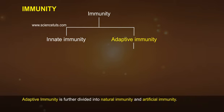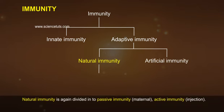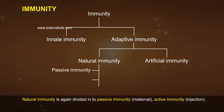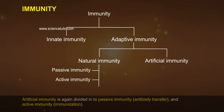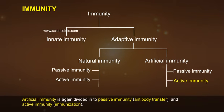Adaptive immunity is further divided into natural immunity and artificial immunity. Natural immunity is again divided into passive immunity (maternal) and active immunity (injection). Artificial immunity is again divided into passive immunity (antibody transfer) and active immunity (immunization).